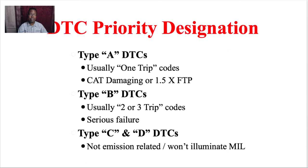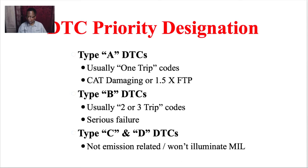A Type B code is a two-trip failure — it fails once and leaves a pending code; if it fails again, the light will come on. Type C and D codes are non-emissions-related codes that can store in the system but will not turn on the MIL light.